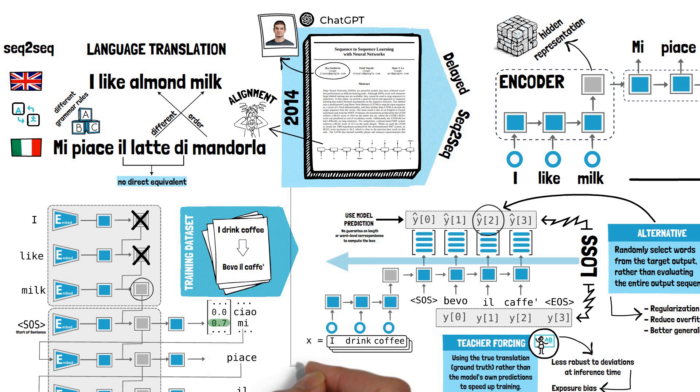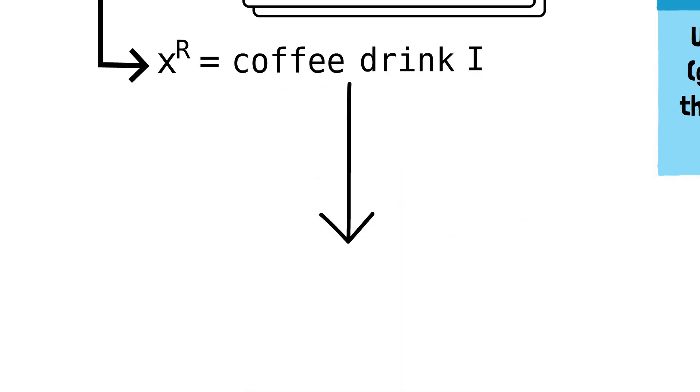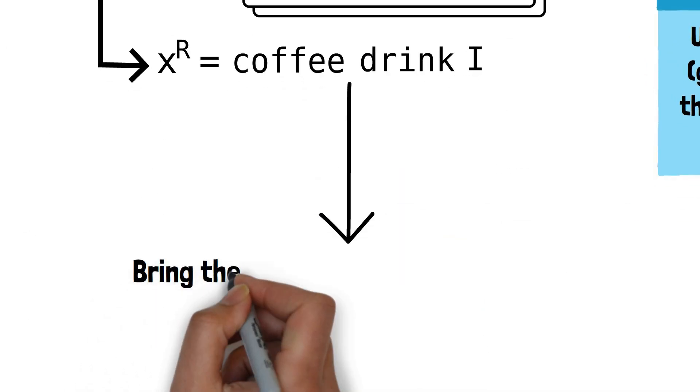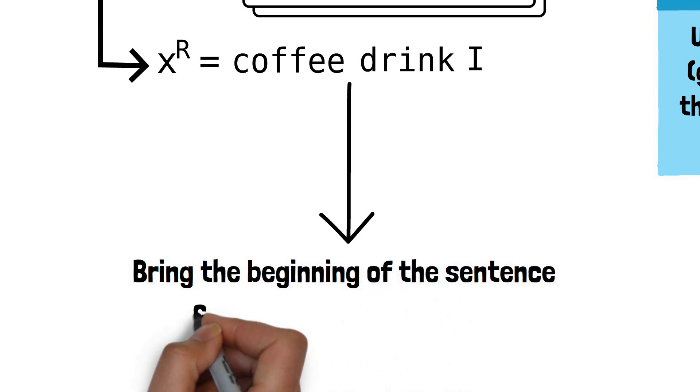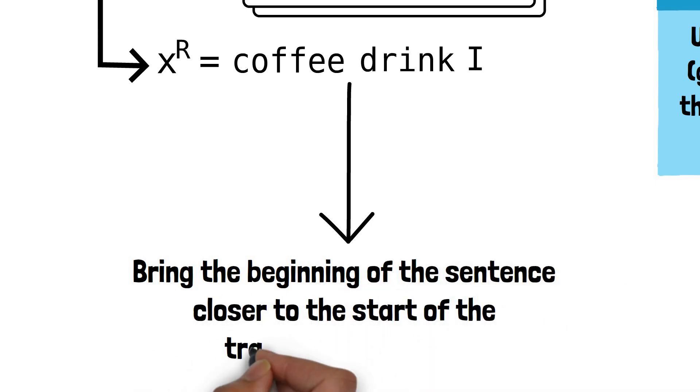So, this is the basic translation model. It works, but there are a couple of optimizations that we can do that are going to make the model perform better. In that paper, Sutskever et al. empirically observed that reversing the input sequence improves the model's performance. This likely happens because it brings the beginning of the sentence closer to the start of the translation process, making it easier for the model to establish a better correlation.